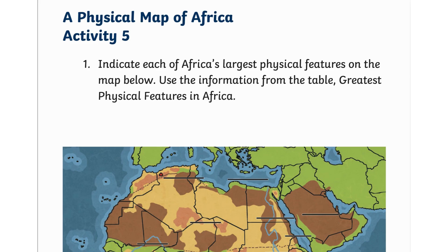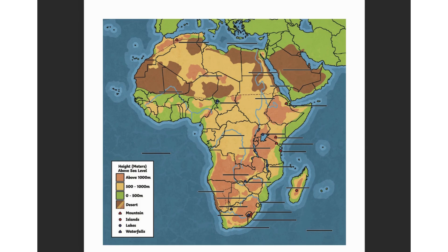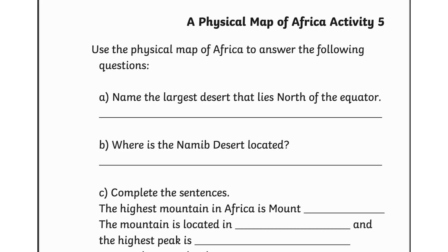For the activity, indicate each of Africa's largest physical features on the map using the information from the table. Watch out for the key — every map has a key that tells you what each color code represents. Use the physical map of Africa to answer the following questions: Name the largest desert that lies north of the equator. Where is the Namib Desert located?